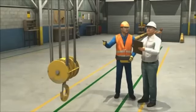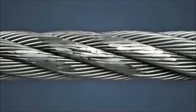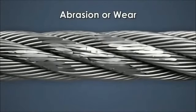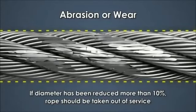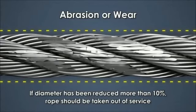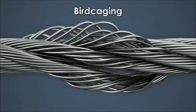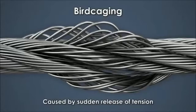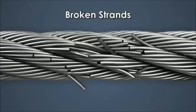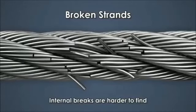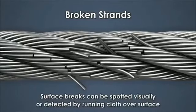There are many conditions that can cause a wire rope to become dangerous. Immediately notify your supervisor if you see: abrasion or wear — this can occur during the normal life of the rope, and if the diameter of the rope has been reduced by more than 10%, the rope should be taken out of service; birdcaging — this is when the rope strands have become separated, creating a birdcage effect, caused by sudden release of tension and greatly weakening the rope; or broken strands — these can occur within the rope or on the surface. Internal breaks are harder to find but are very dangerous. Surface breaks can be spotted visually or detected by running a cloth over the surface to find snags.